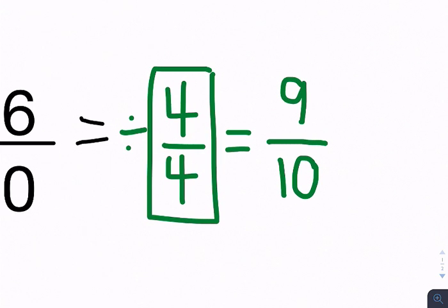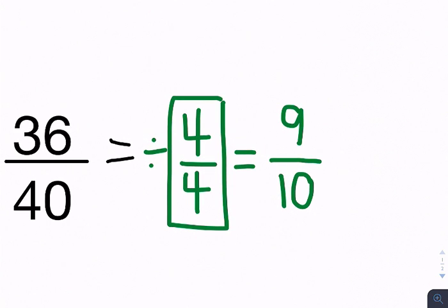Now I have 9/10. Nothing except for 1 goes into 9 and 10 evenly. They aren't both divisible by the same number anymore. So 9/10 is my simplified answer.